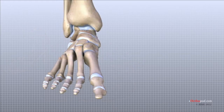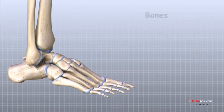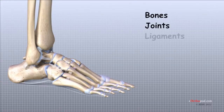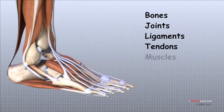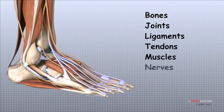The foot is an incredibly complex mechanism. Over the next few minutes, I will try to highlight the structures that relate to conditions and surgical procedures of the foot. The important structures of the foot can be divided into several categories. These include bones and joints, ligaments and tendons, muscles, nerves, and blood vessels.